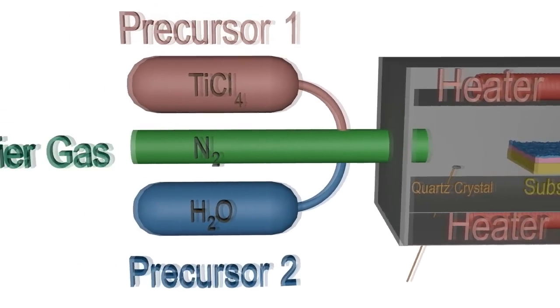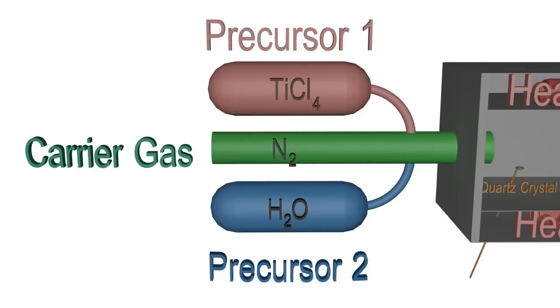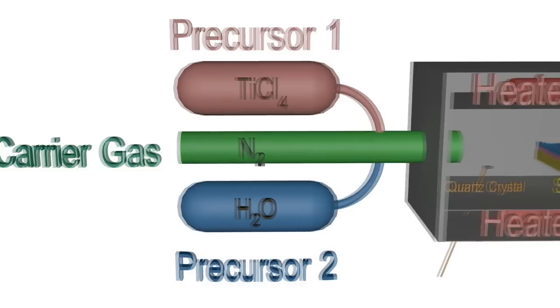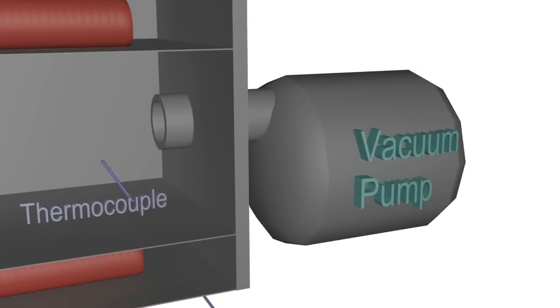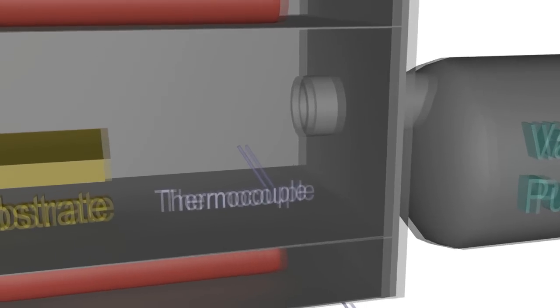The chemicals used for the deposition are called precursors and enter the reaction chamber along with the carrier gas. A vacuum pump is used to ensure low pressure and that the reaction byproducts and precursor leftovers are removed.